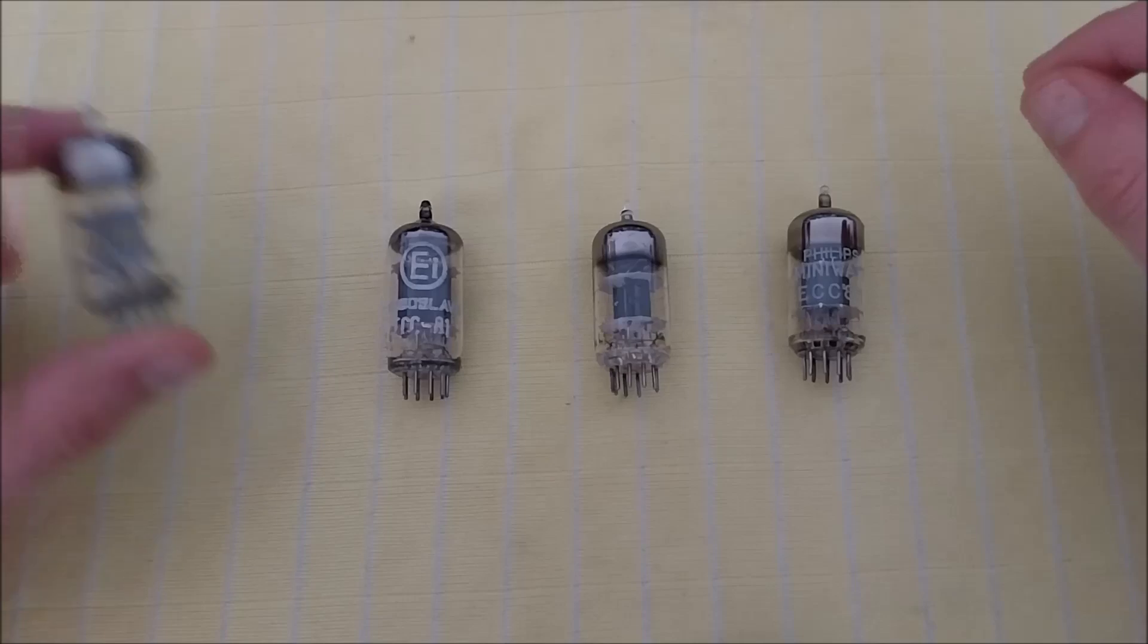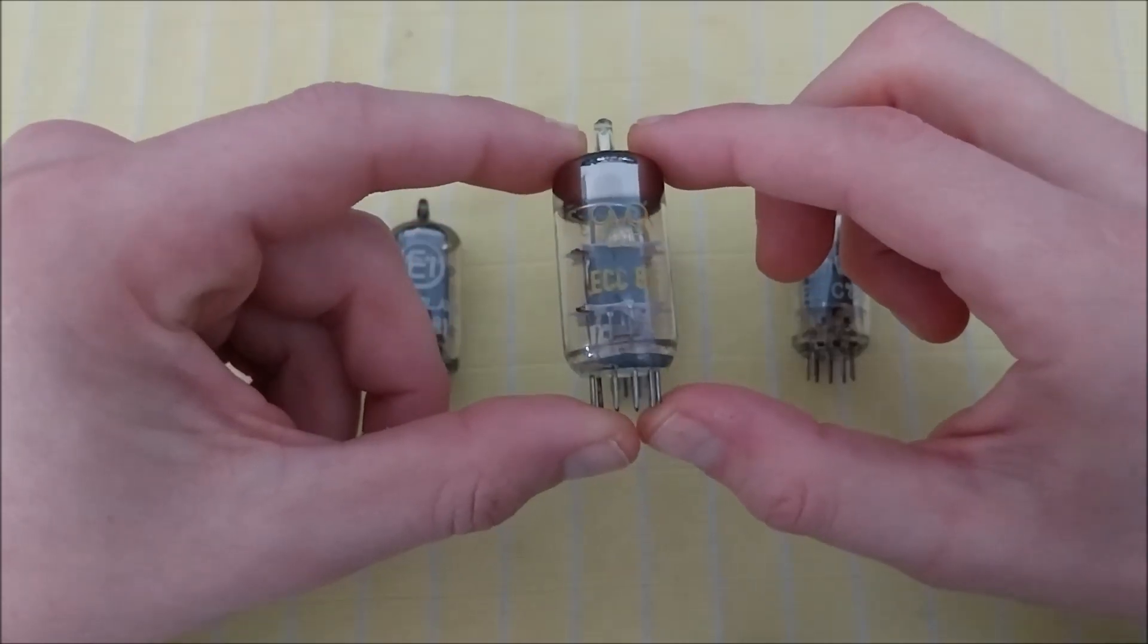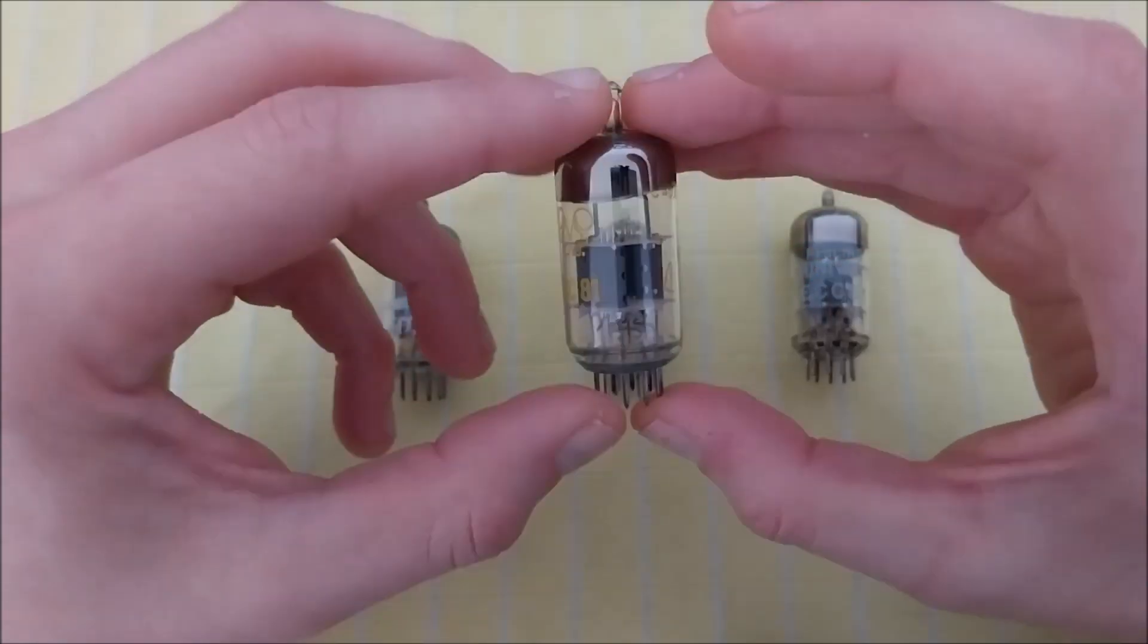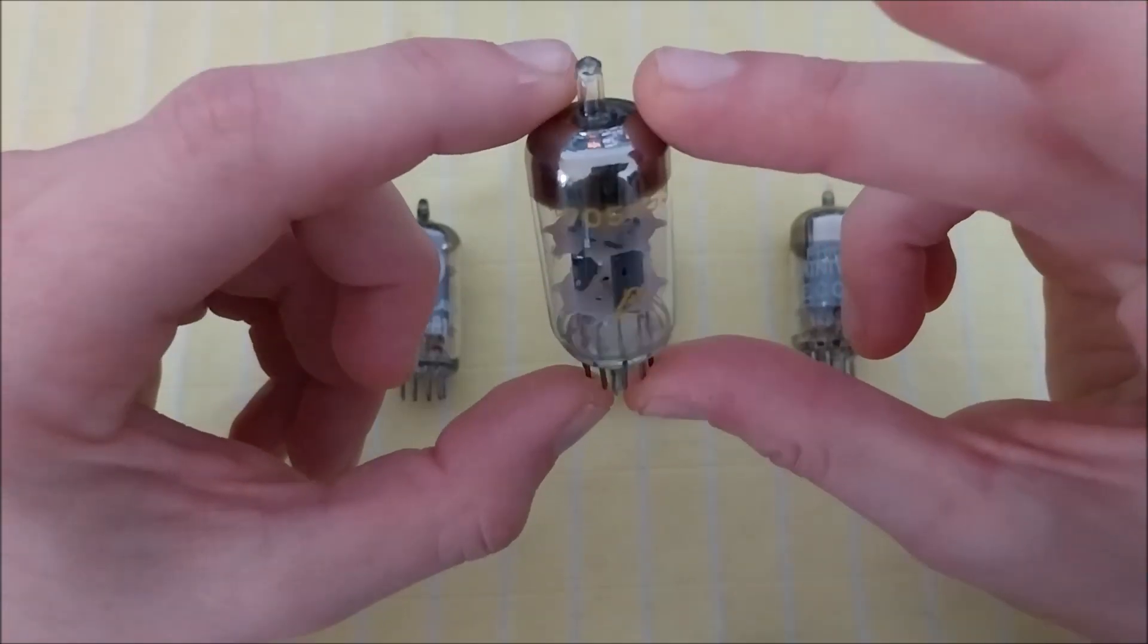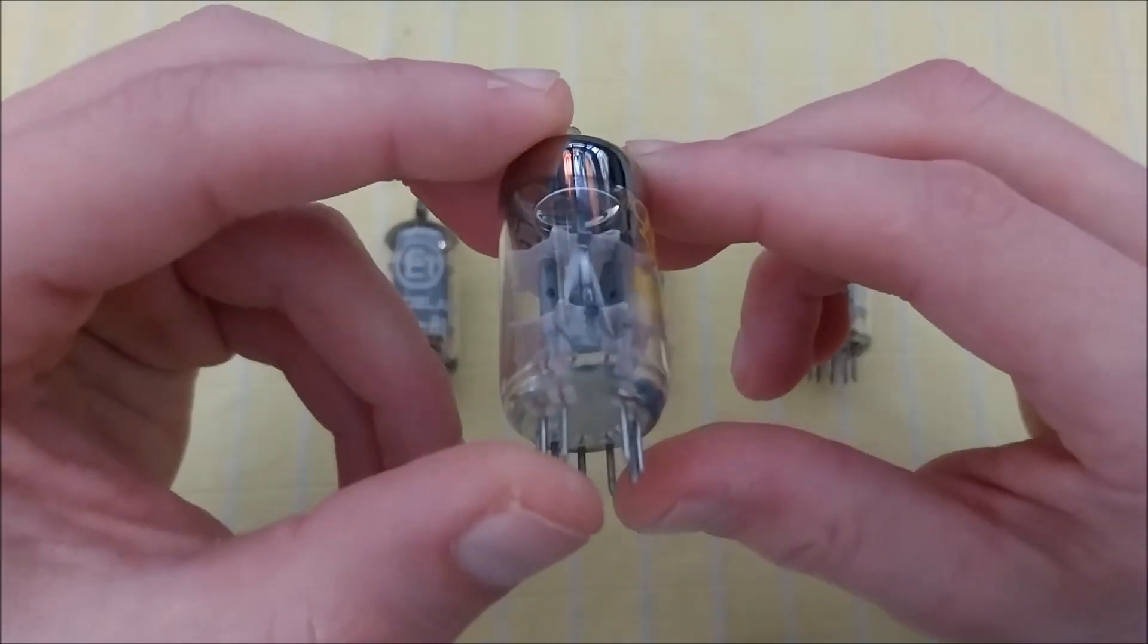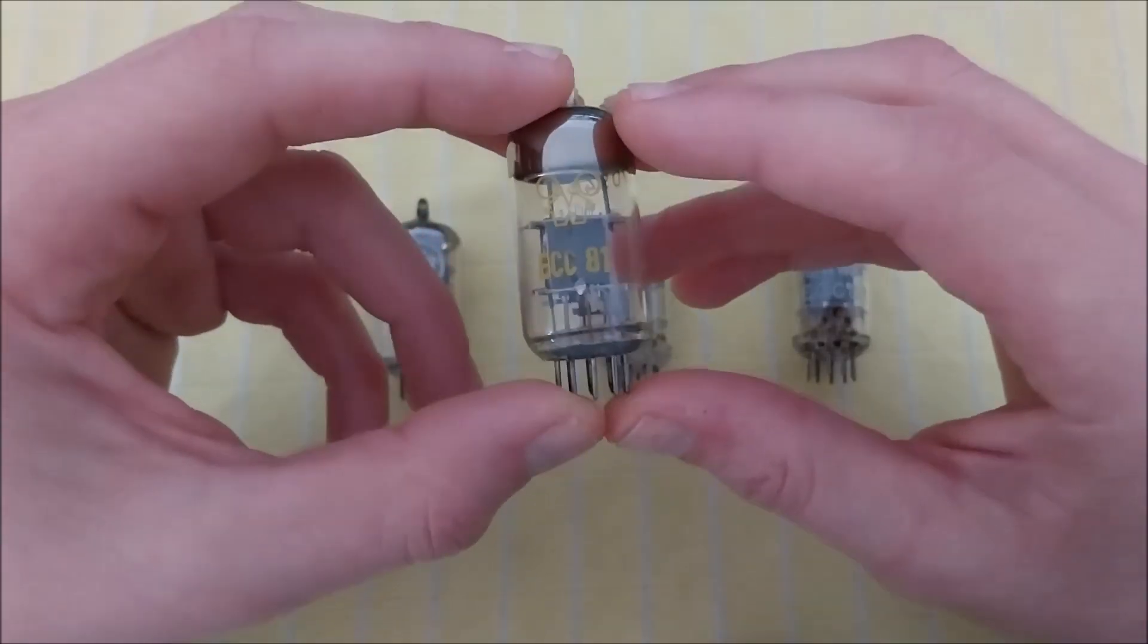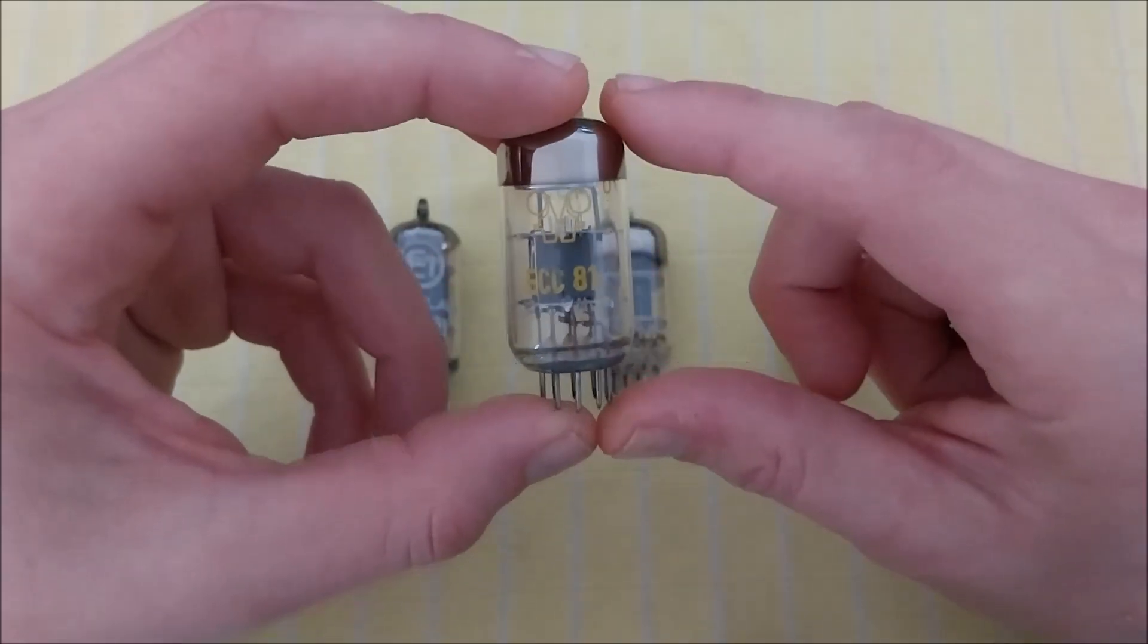Let's start from here. This is RFT ECC81. As I mentioned already in a previous video when I talked about German-made tubes, this is an Eastern Germany made tube. It's very easy recognizable by its unique plate structure - it has very thin plates and very spiky spacers, usually has a halo getter.